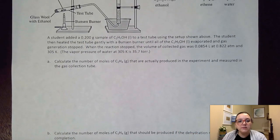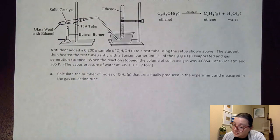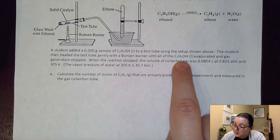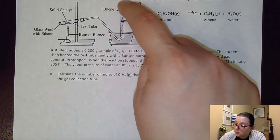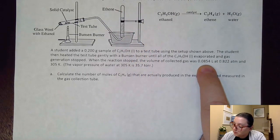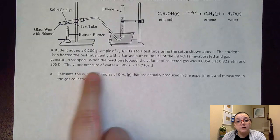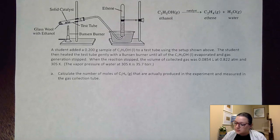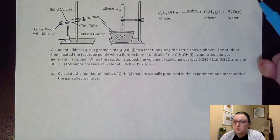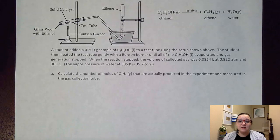So then it says, a student added a 0.2 gram sample of the ethanol to a test tube using the setup shown above. So they are putting that 0.2 grams back over here. And then they're heating the test tube gently until all of it evaporated and the gas generation stopped. When the reaction stopped, the volume of gas collected over here was 0.0854 liters at 0.822 atmospheres and 305 Kelvin. And then you notice they also give us here the vapor pressure of the water. So they're giving us all that good information there. So then it says, calculate the number of moles of C2H4, that's the ethene, that are actually produced in the experiment and measured in the gas collection tube.